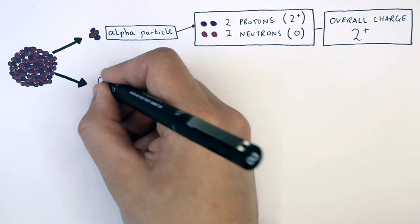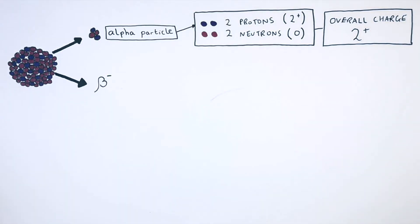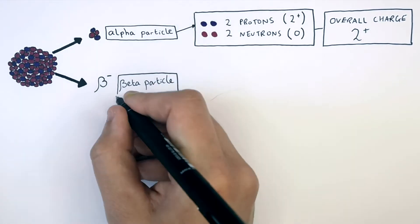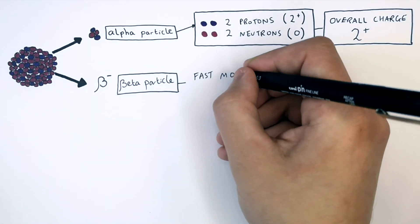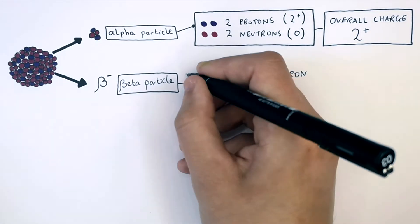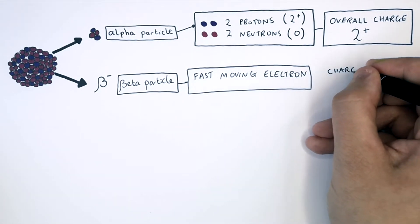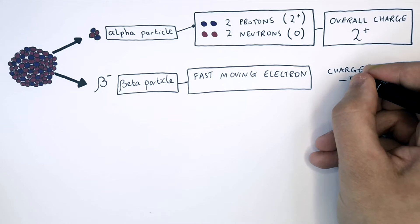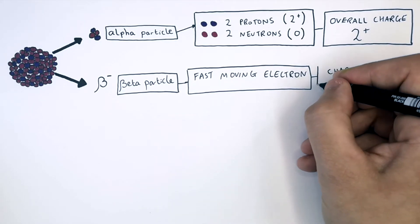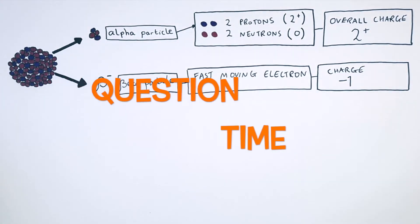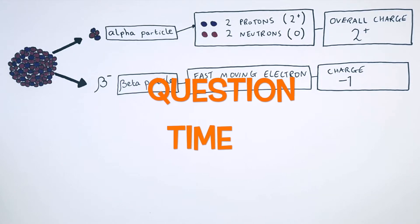But what is beta particle emission? Beta particle emission. A beta particle is an electron. It's a fast moving electron. So you already know what the charge is of an electron. It's got a charge of minus one. It's question time. Attempt these questions to check your understanding.